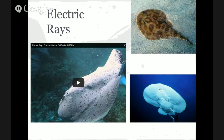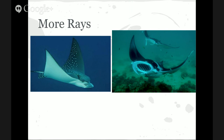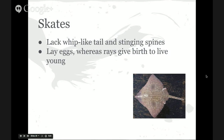Sawfishes look like saw sharks but have ventral gill slits. They feed by swinging their blades through schools of fish and can be up to about 36 feet long. Electric rays have special organs around their head that can produce around 200 volts of electricity, used to stun prey and discourage predators. Manta rays and spotted eagle rays — also called devil rays — look like they fly through the water using their pectoral fins like wings. Skates look like rays but lack a whip-like tail and stinging spines. Another key difference: skates lay eggs, whereas rays give birth to live young.